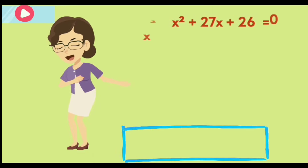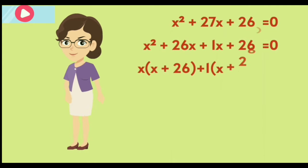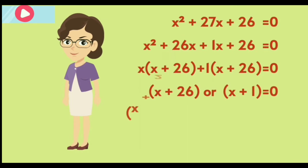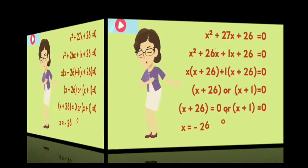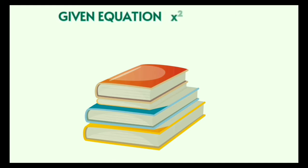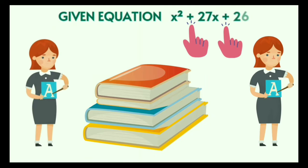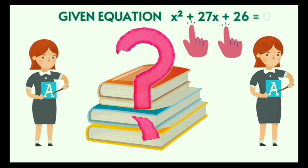You can now see how the overall equation looks when solved using the five steps explained. The first equation was easy as it had only plus signs. But what if the equation has both plus and minus signs? The question then arises: which sign should be applied to which factor?